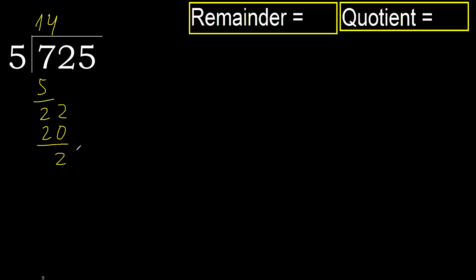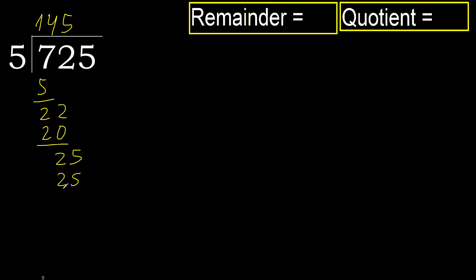Subtract. Next: 25. 5 multiplied by 5 is 25. 25 is not greater, ok. Subtract.